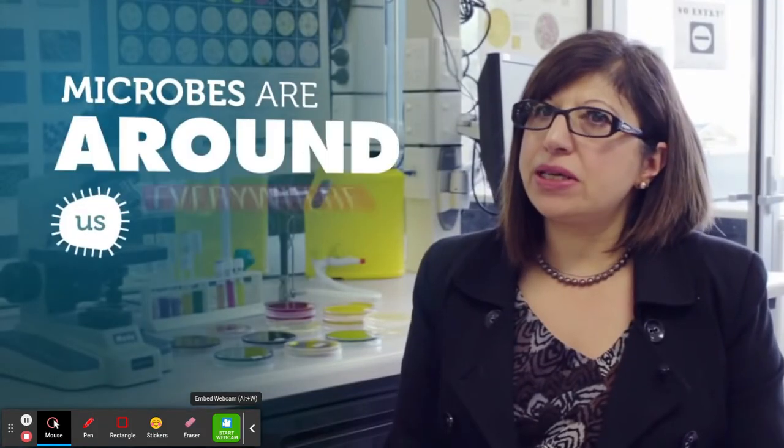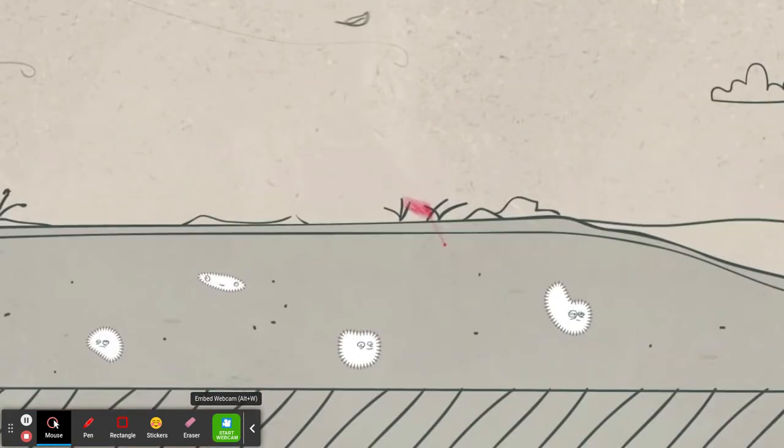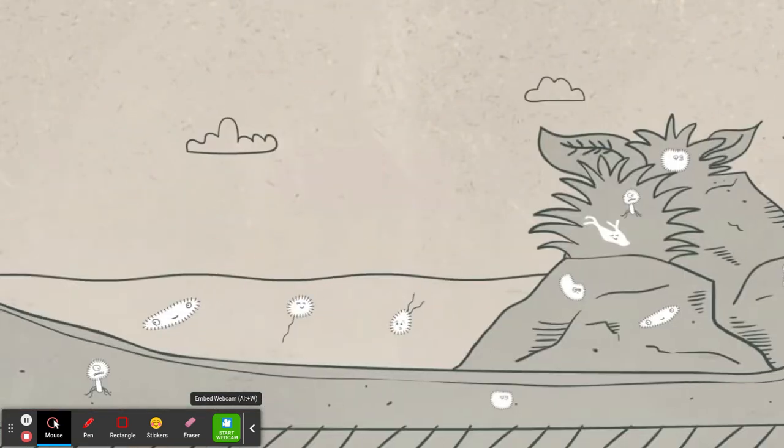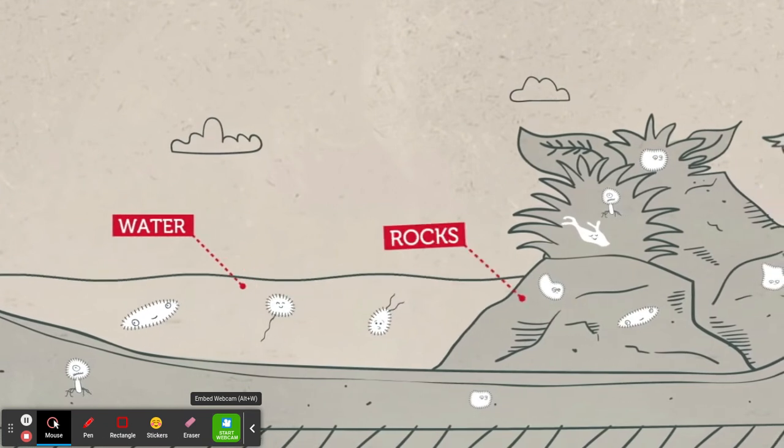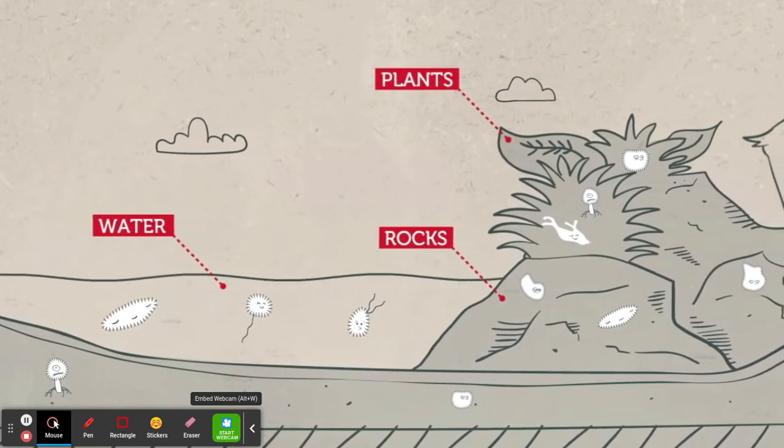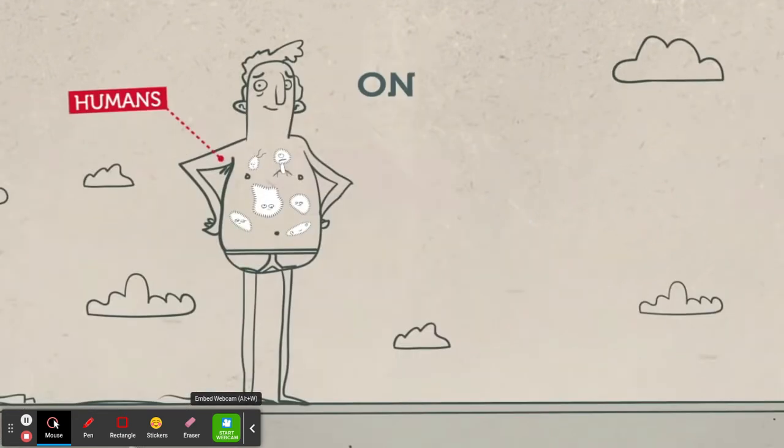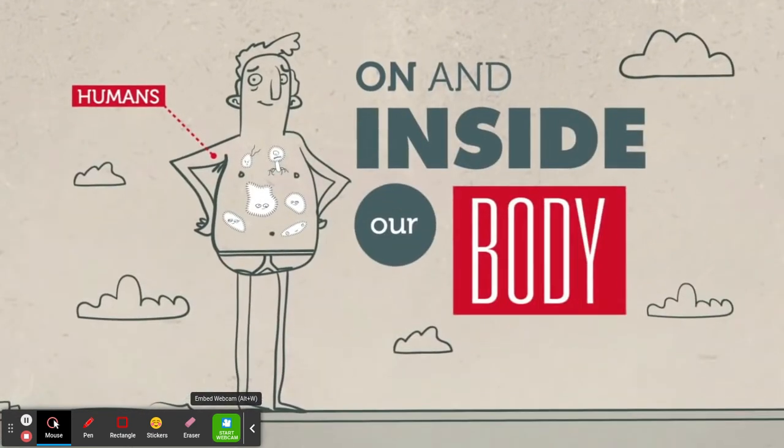Microbes are around us everywhere. We can find them in the air, in the soil, in water, on rocks, on plants, in animals, and on and inside our body.